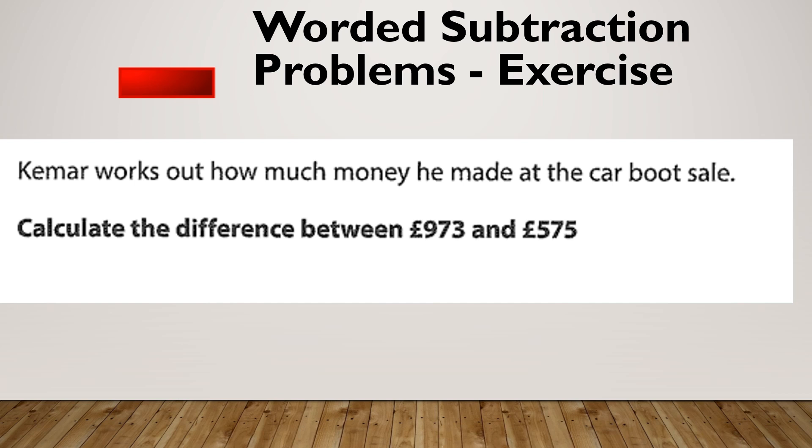Kamar works out how much money he's made at a car boot sale. Calculate the difference between 973 and 575. Pause the video and give this one a go. OK, hopefully you got 398. Because it says difference, I know it was a takeaway.